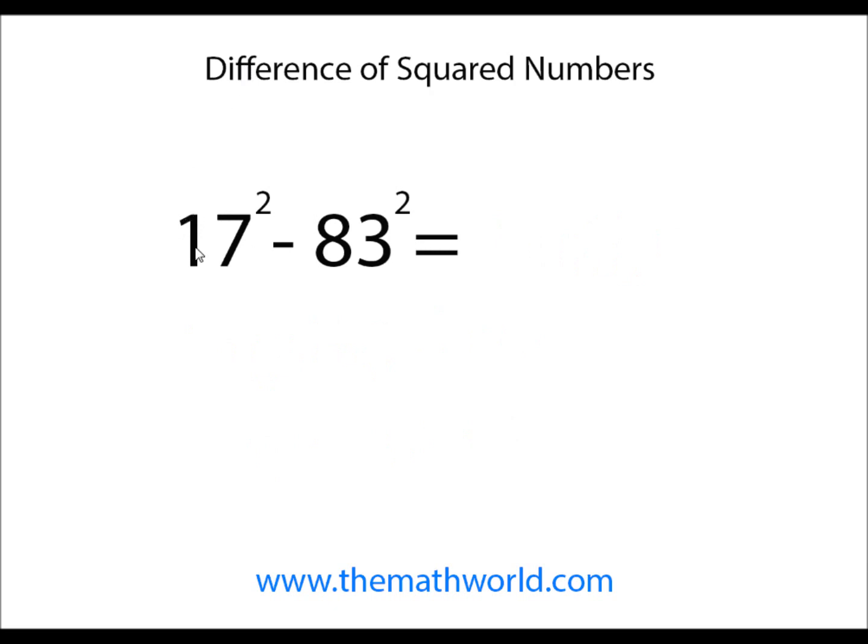Next example we're going to look at is 17 squared minus 83 squared. We will first add these numbers. So 17 plus 83 is 100. And then 17 minus 83 is minus 66.